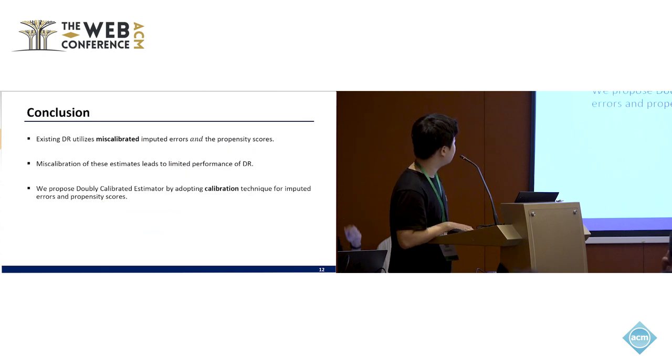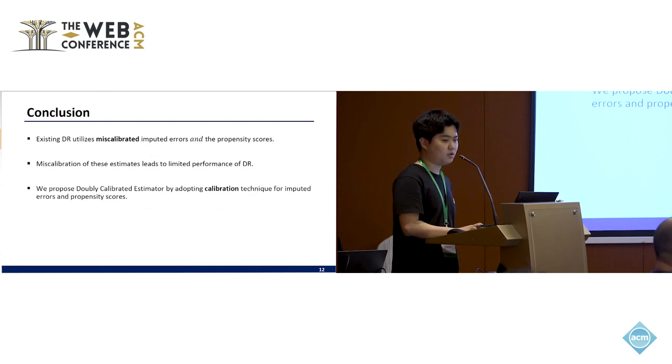Okay, so the conclusion is existing doubly robust methods utilize miscalibrated estimates, and we adapt calibration technique for those estimates. And by adapting calibration technique, the doubly robust estimator shows better recommendation performance. Thank you. My presentation is finished. Is there any question?